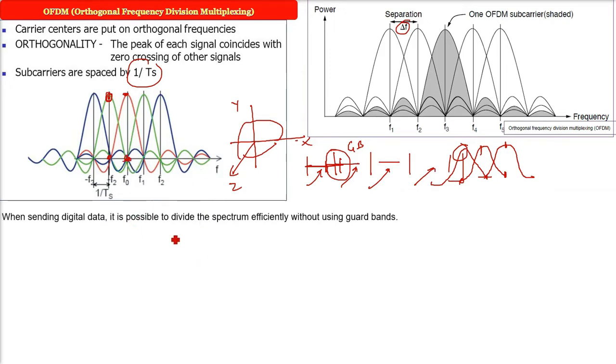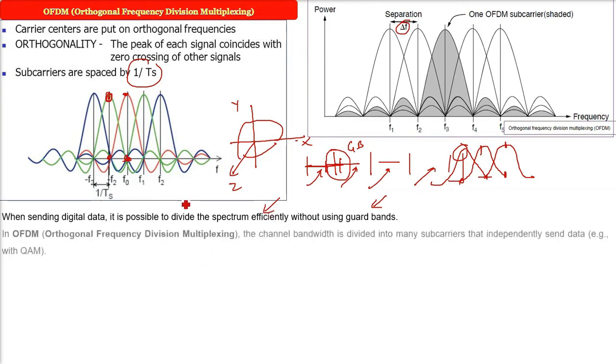When sending digital data, it is possible to divide the spectrum efficiently without guard bands because in FDM or frequency division multiplexing, we have to give some power to the guard band and that is the wastage of that particular frequency being allocated. So here we are dividing the spectrum efficiently.